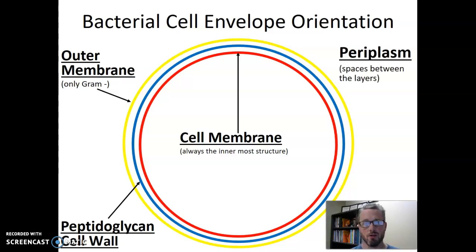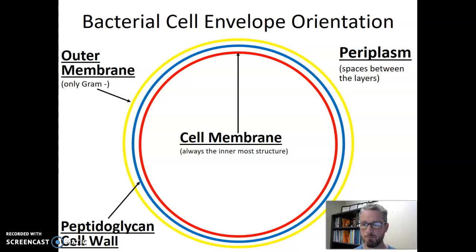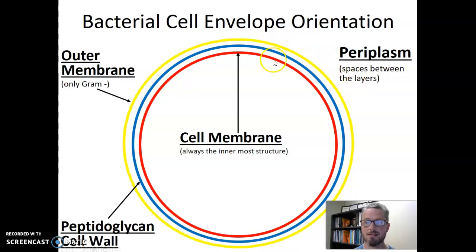There's one last space we should name. When we talk about these cell envelopes, we also talk about the periplasm, or periplasmic space. The periplasm is the space in between these layers. In a gram-negative that has all three layers, the periplasm is all the space between the outer membrane and the cell membrane. In gram-positives that lack the outer membrane, the periplasm is the space between the cell membrane and the cell wall. So gram-negatives have a larger periplasm and gram-positives have a smaller periplasm, but both kinds of bacteria do have a periplasm.